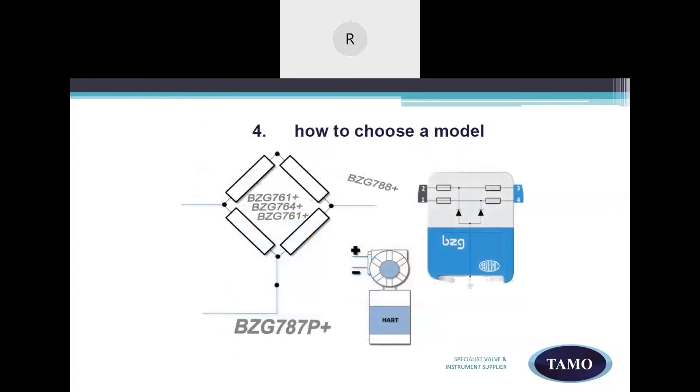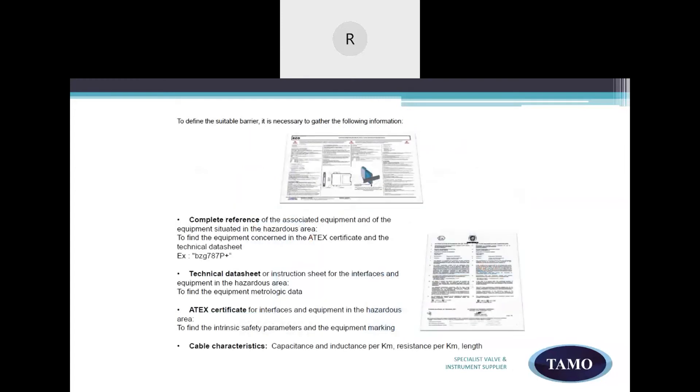Let's look at an example of how to choose a model of the BZG Zeno Barriers from Georgian. As discussed earlier in the loop calculation slide, to establish a suitable barrier, you will require the following documentation. Complete reference of the associated equipment and of the equipment situated in the hazardous area. Technical data sheet or instruction sheet for the equipment in the hazardous area to find the metrological data. An ATEX certificate for the interfaces and equipment in the hazardous area to find the intrinsic safety parameters and the equipment markings. And finally, the cable characteristics for capacitance and inductance per kilometer and resistance per kilometer.